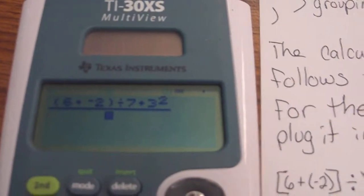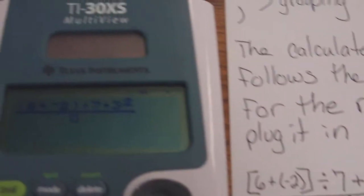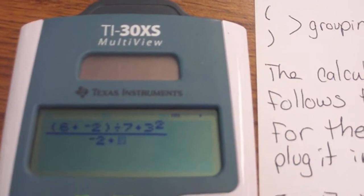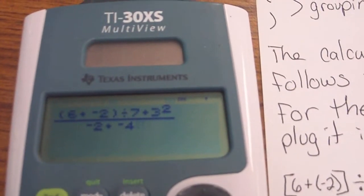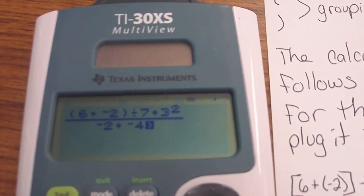So now let's enter in the bottom part. The bottom says negative 2 plus negative 4. Negative 2 plus negative 4. And again, you'll notice I didn't put the negative 4 in parentheses. The calculator doesn't need me to.